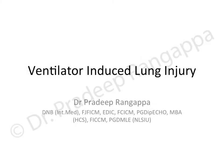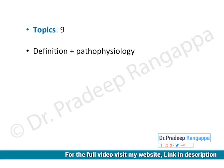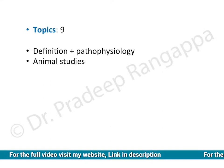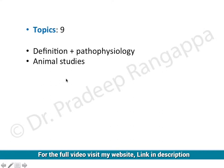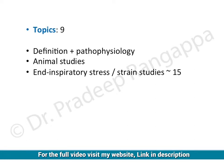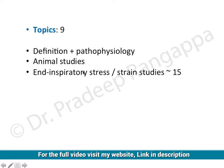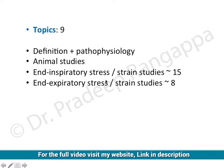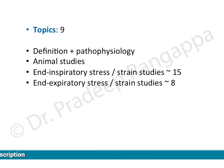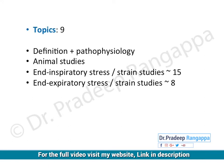Today I'll be talking about ventilator-induced lung injury. The topics I will be covering include the definition and pathophysiology of this concept of ventilator-associated lung injury — where it came from, and what we have understood about it from animal studies. There are around 15 studies done in different animals to look at the effects of end-inspiratory stress and strain, and around eight studies to look at end-expiratory stress and strain. These animal studies have helped us gain insights into the whole concept of VALI.